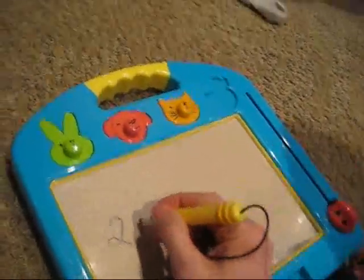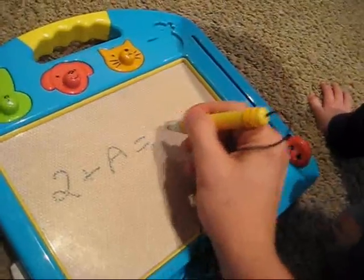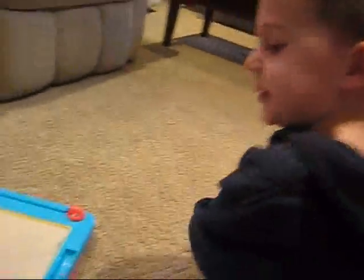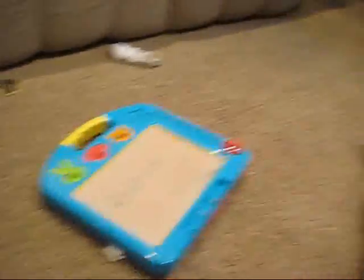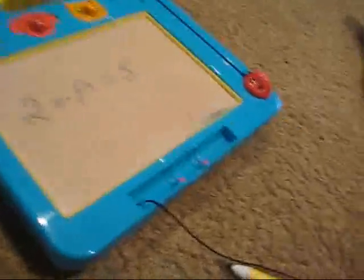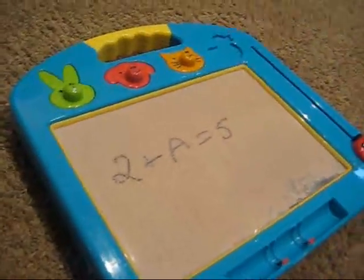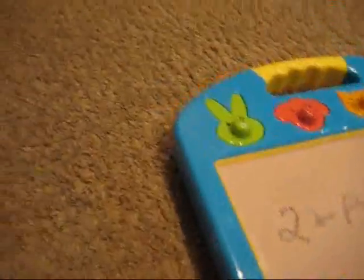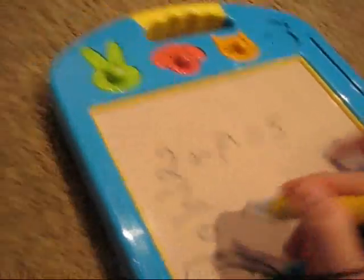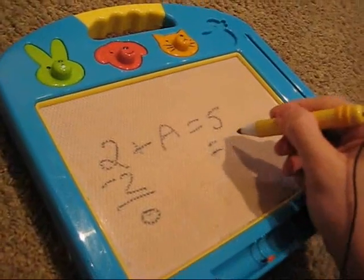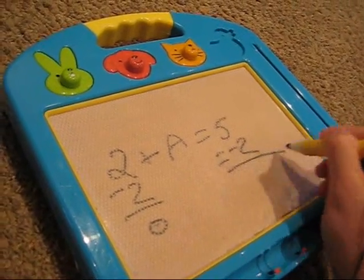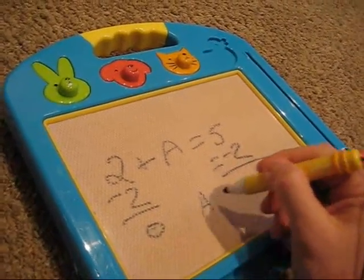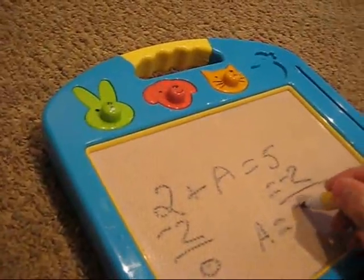Two plus A equals five. Alright, what do we have to do? Two plus... What do we need to do first? Subtracting. What's that? Subtracting. Okay, what do we have to do? Two minus two is zero. Okay, right here. Then we do it on the other side. Okay. You subtract two on this side? Five. Okay. Five minus two is three. So A equals three.